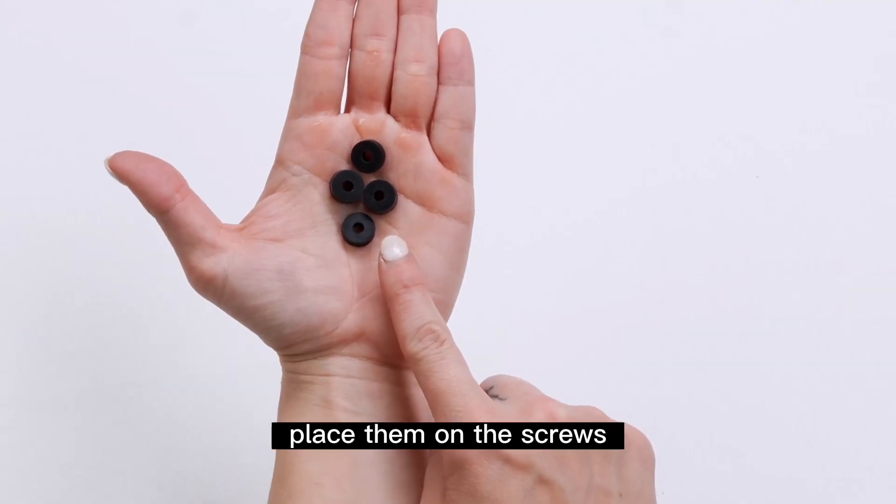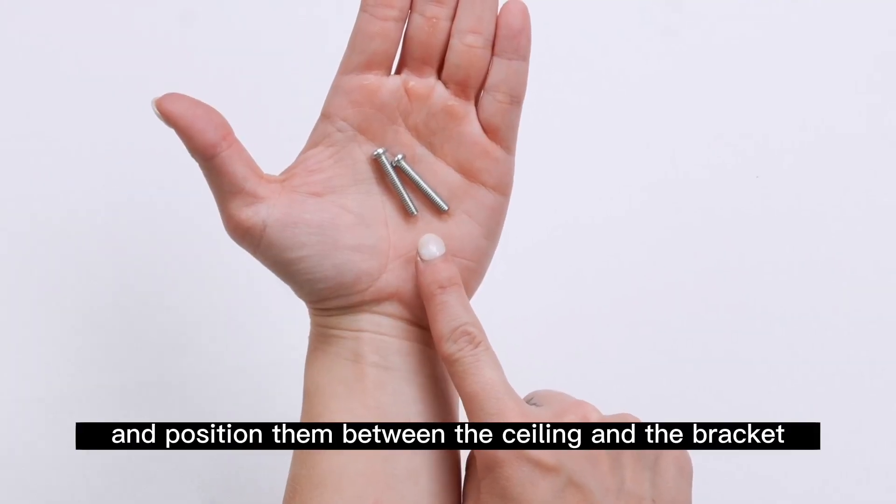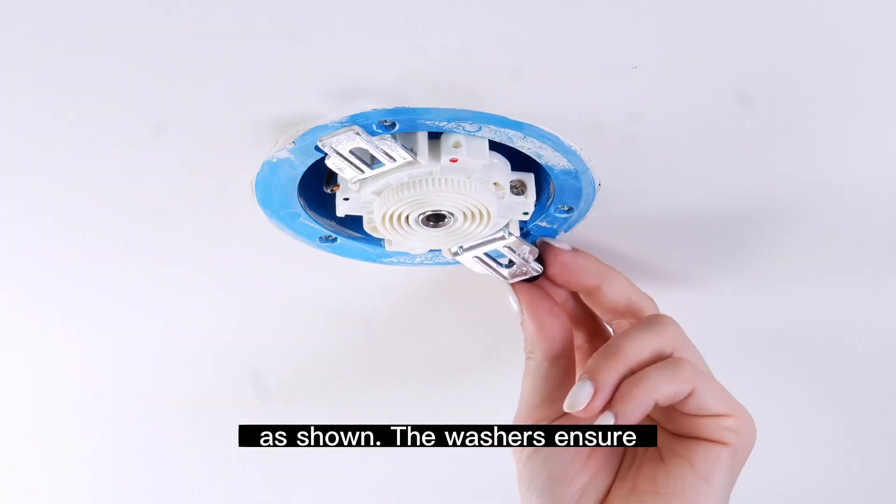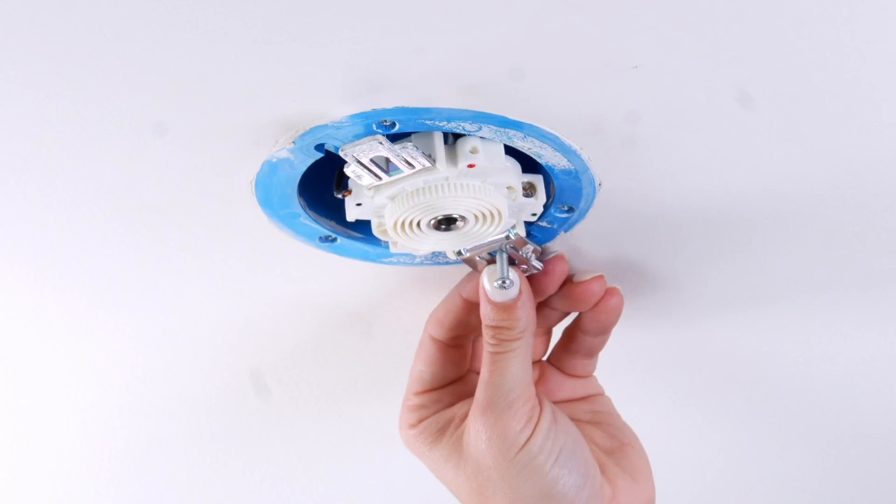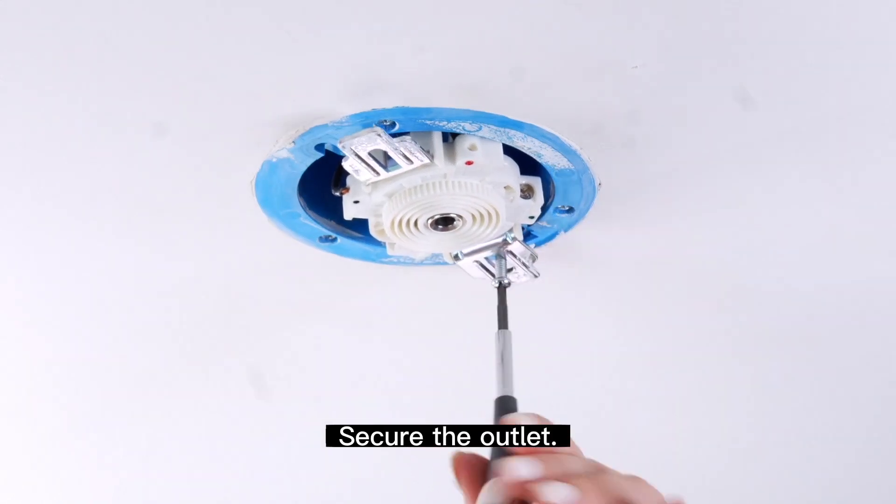Using the rubber washers, place them on the screws and position them between the ceiling and the bracket as shown. The washers ensure proper placement of the sky outlet on the ceiling. Secure the outlet.